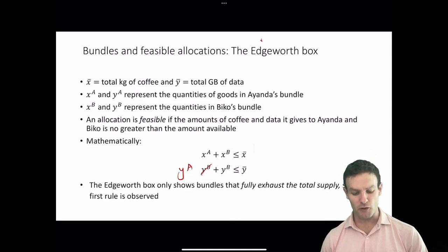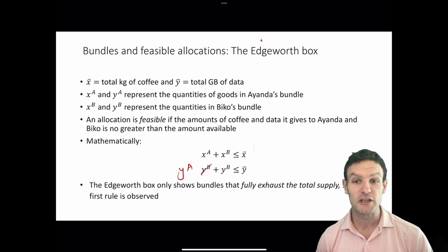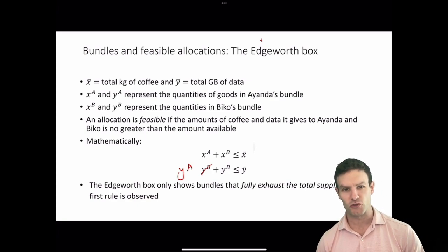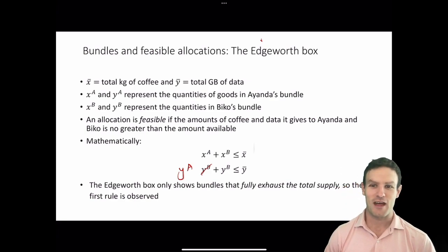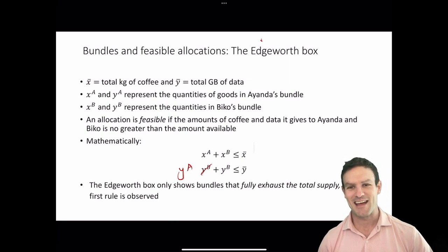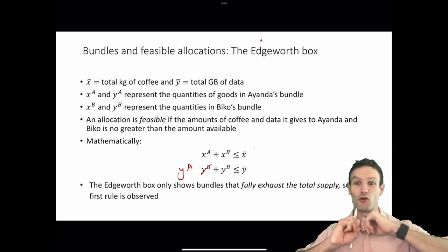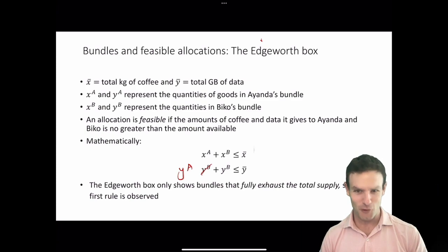The Edgeworth box only shows bundles that fully exhaust the total supply, so that the first rule — that nothing gets thrown away — is observed.